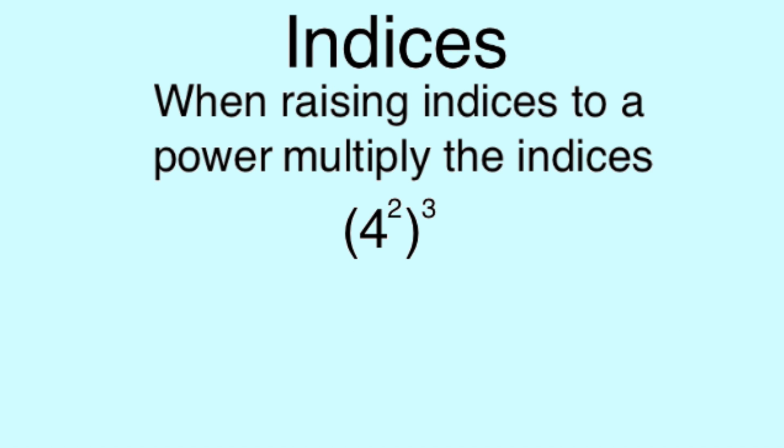The next example to remember is when raising indices to the power, multiply the indices. So here we have 4 to the power of 2, to the power of 3, so we're just simply 2 times 3 equals 6, so you would have 4 to the power of 6.